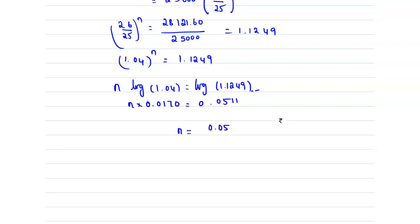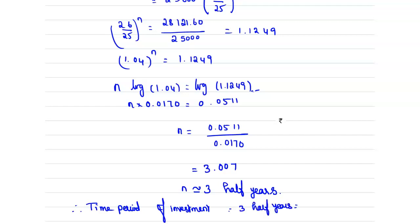From this we have n equals 0.0511 divided by 0.0170, which equals 3.007. We can say approximately 3 half years. Therefore, the time period of investment equals 3 half years. If we are converting to years, this will be 1.5 years.